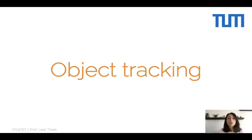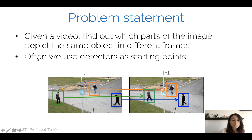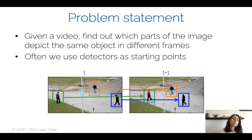Hello and welcome to the lecture on object tracking. Today we will cover single object tracking as well as multiple object tracking. When we refer to tracking, it means that given a video, we first want to find out which parts of the image depict the same object in different frames. For example, we want to know that a green box depicts a pedestrian at frame t and the same green box depicts exactly the same pedestrian at frame t plus one. So not only do we want to detect objects, but we also want to make this association between different time frames.